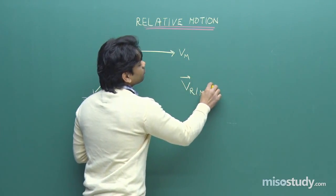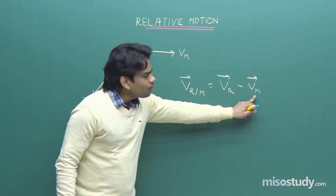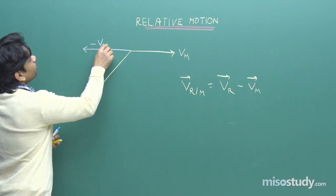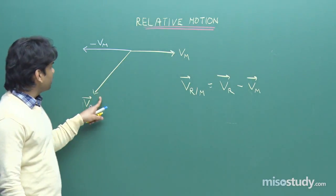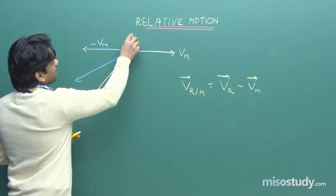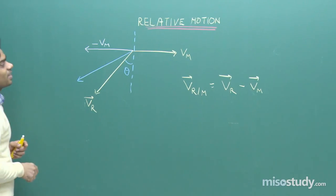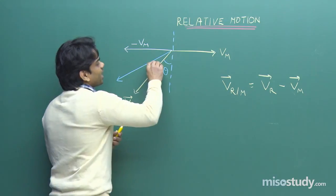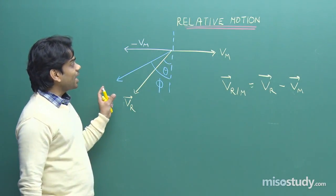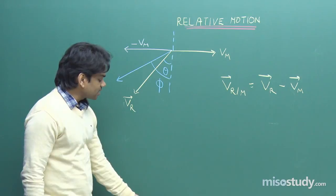The velocity of rain with respect to man is given by the equation: V_R/M = V_R minus V_M. To do this vector subtraction, I take the negative of V_M. The resultant of V_R minus V_M lies somewhere here. The rain was falling at angle theta with the vertical, and finally you have to hold the umbrella at angle phi. From this diagram you can find the angle with which to hold the umbrella with respect to the vertical.